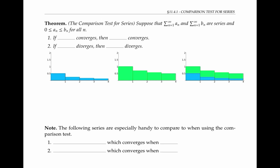In the pictures below, the heights of the blue bars represent the a sub n's, and the heights of the green bars represent the b sub n's. Putting the pictures together, we see that the heights of the blue bars are less than the heights of the green bars, giving us the inequality zero ≤ a sub n ≤ b sub n.